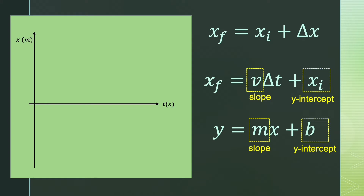The y-intercept corresponds to the initial position, because when time is zero, the graph starts at some position. That's where the object starts — either when we begin graphing its motion or when it starts moving. So the y-intercept is the initial position.